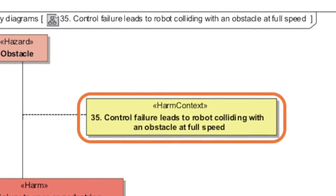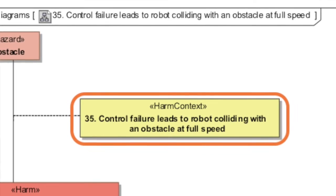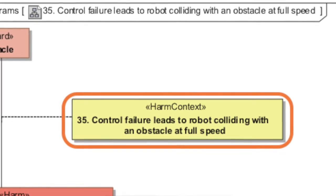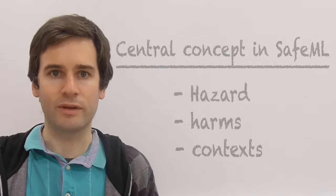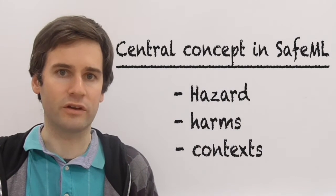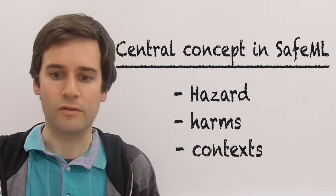This is because in SafeML, hazards are always present but harms are only caused under specific circumstances. I'm now going to explain what I mean by all these terms such as hazards, harms, and contexts in SafeML.